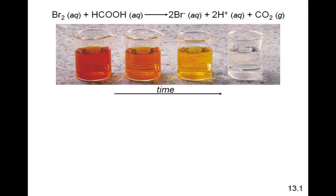This is a specific reaction: aqueous bromine and aqueous formic acid react to form two bromine ions, two hydrogen ions, and carbon dioxide. We can see that the reaction starts as a very dark color from the bromine. As time goes by, the color gets lighter and lighter because the bromine, dissolved in water, gives that dark brownish-orange color. As the reaction proceeds, the amount of bromine decreases, going from a colorful solution to a colorless one — this is how we monitor the reaction based on the change in color.